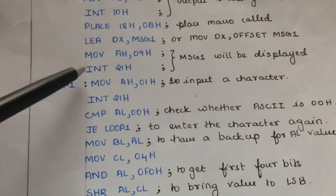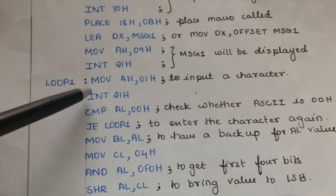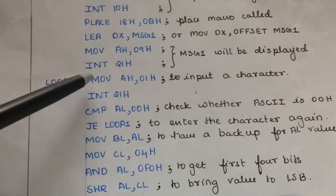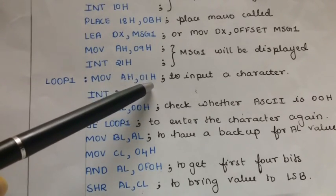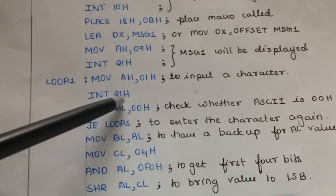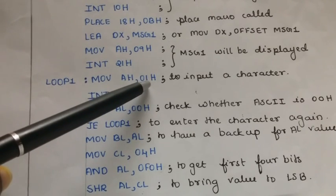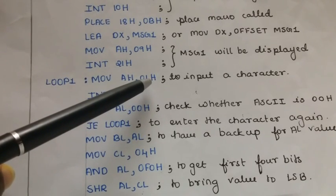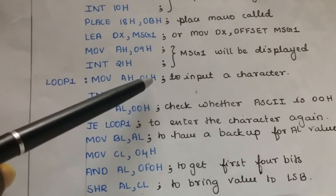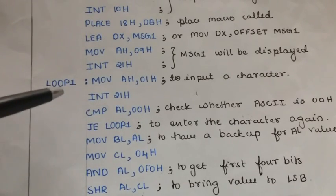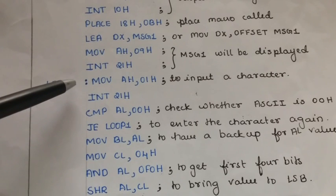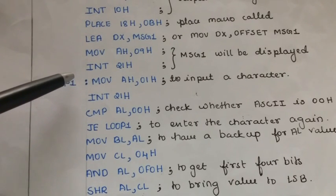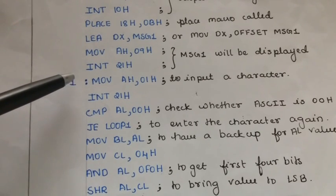After displaying message1, we will have to read a character. In order to read a character, we write these two instructions i.e. move ah, 01h and interrupt 21h. Here, 01h is a DOS service number which is used to read a character. Before going further, we should know a fact that whenever a character is entered, its ASCII value will be stored into the accumulator register i.e. ax.